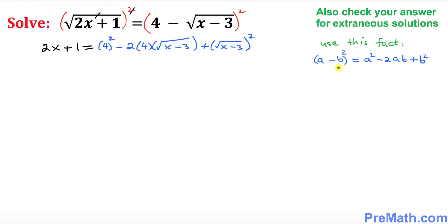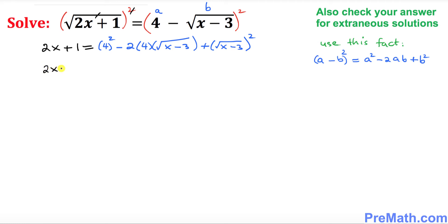On the right hand side we used the identity (a minus b)²: here a was 4 and b was the square root of (x minus 3). Simplifying: 2x plus 1 equals 4² which is 16, minus 2 times 4 which is 8, times the square root of (x minus 3), plus — since the square and square root undo each other — we get x minus 3.